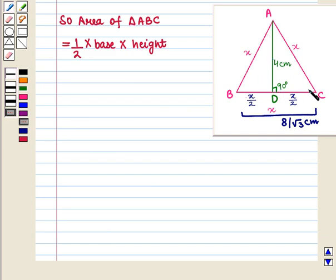So base BC which is equal to x will be equal to 8 upon square root of 3 centimeters. Now area of triangle ABC is equal to 1 by 2 into base into height, that is 1 by 2 into 8 upon square root of 3 into 4. Now this is equal to 16 upon square root of 3 cm squared.